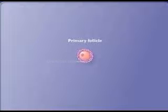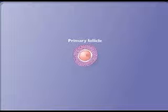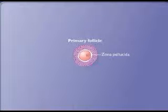The primary follicle enlarges and the granulosa cells form more than one layer. The zona pellucida forms around the oocyte.